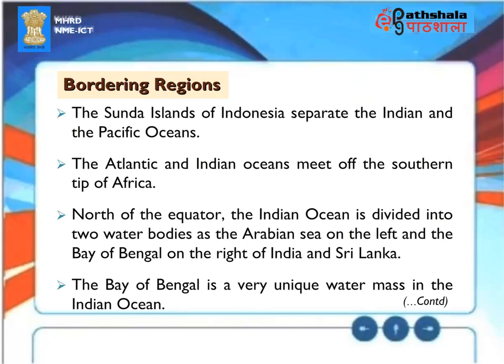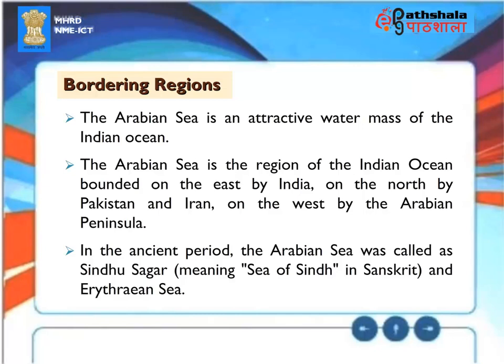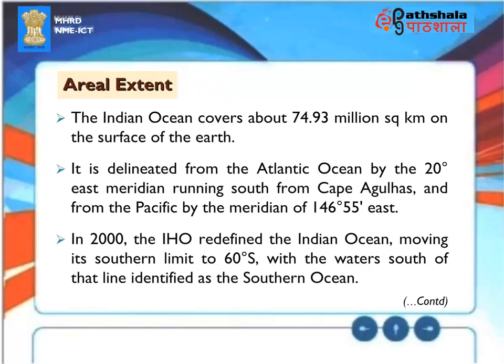Bordering Regions. The Sunda Islands of Indonesia separate the Indian and the Pacific Oceans. The Atlantic and Indian Oceans meet off the southern tip of Africa. North of the equator, the Indian Ocean is divided into two water bodies: the Arabian Sea on the left and the Bay of Bengal on the right of India and Sri Lanka. The Bay of Bengal is a very unique water mass in the Indian Ocean. The Arabian Sea, bounded on the east by India, on the north by Pakistan and Iran, and on the west by the Arabian Peninsula, was called Sindhu Sagar — meaning Sea of Sindh in Sanskrit — and the Erythrean Sea in ancient times.